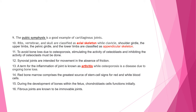Number nine: the pubic symphysis is a good example of cartilaginous joints. I will have multiple choice questions for this PowerPoint, but only members who join my channel can access it — 16 questions as well. Number ten: ribs, vertebrae, and skull are classified as axial skeleton, while the clavicle, shoulder girdle, upper limbs, pelvic girdle, and lower limbs are classified as appendicular skeleton.